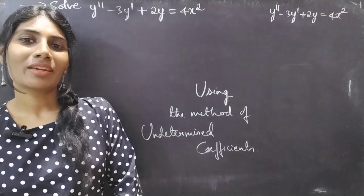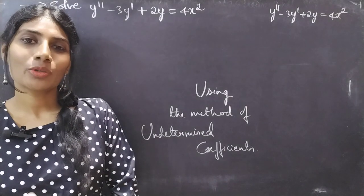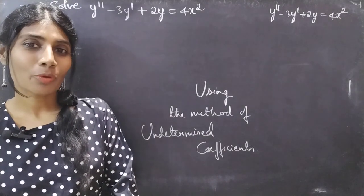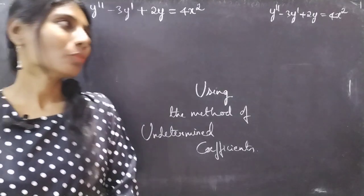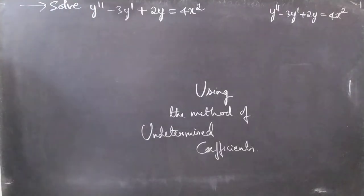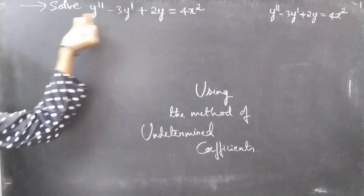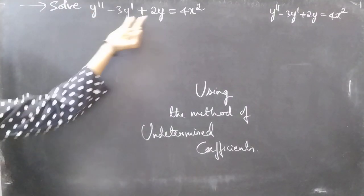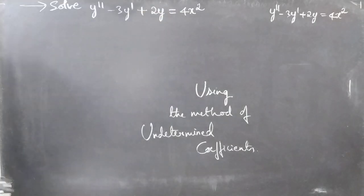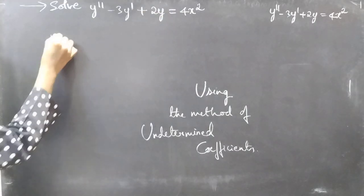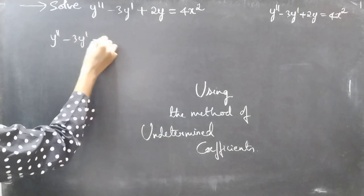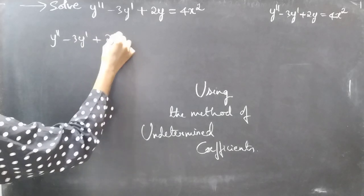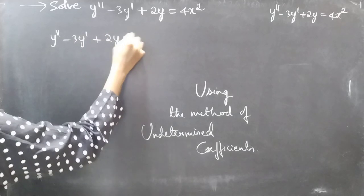Hello everyone, this is Jay Kalpana here. In this video we are going to see a problem using the method of undetermined coefficients. Problem: solve y'' - 3y' + 2y = 4x². We are given a differential equation in terms of y, and we are going to write this in terms of the differential operator.